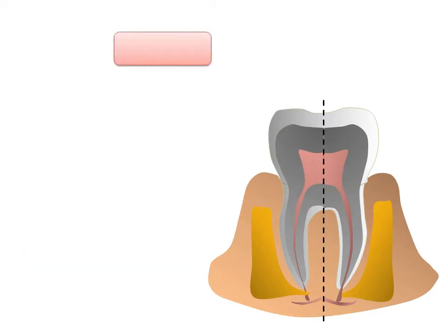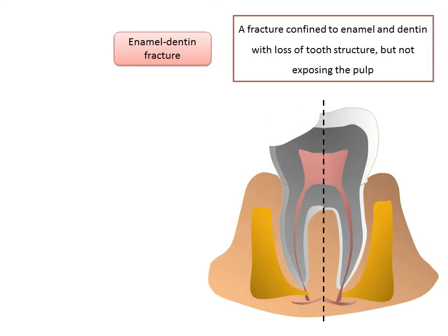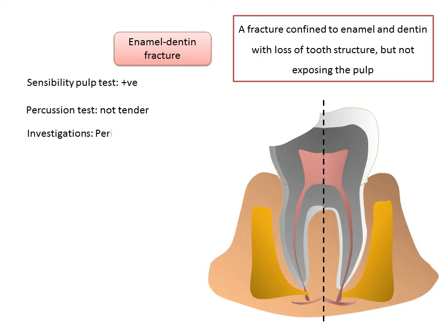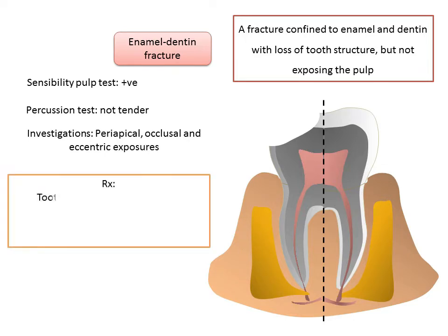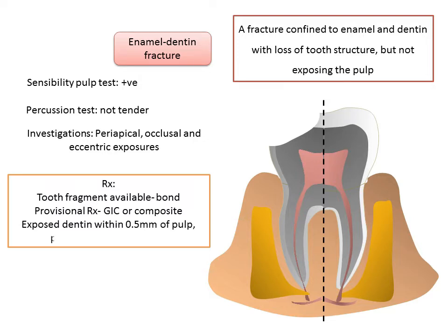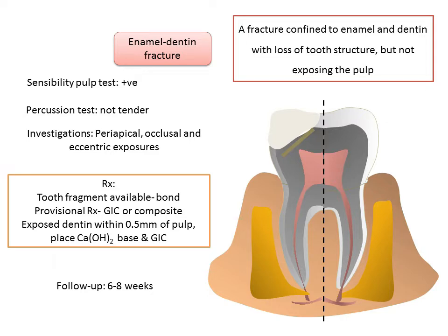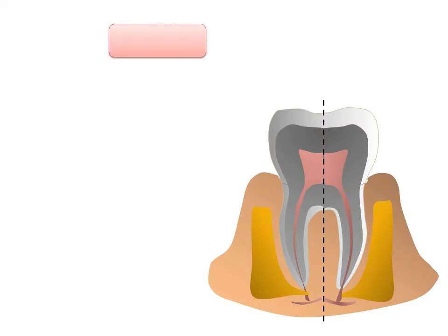Enamel-dentine fracture: the sensibility pulp test is usually positive, the tooth exhibits normal mobility, and is non-tender to percussion. Enamel-dentine loss is clinically visible. Periapical, occlusal, and eccentric radiographic exposures are recommended to rule out displacement or root fracture. If a fragment is available, bond it; otherwise, cover exposed dentine with glass ionomer provisionally or use a bonding agent with composite resin. If exposed dentine is within 0.5 mm of the pulp with a pink, non-bleeding pulp, place a calcium hydroxide base covered with glass ionomer.